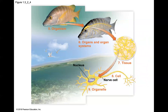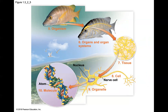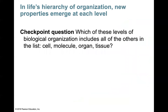At each level, we see new properties emerge at each level of organization. Checkpoint question: in life's hierarchy of organization, new properties emerge at each level. Which of these levels of biological organization includes all of the others in the list — the cell, molecules, organs, and tissue? Which of these includes all of the others? Take a moment and answer that in your notebook.